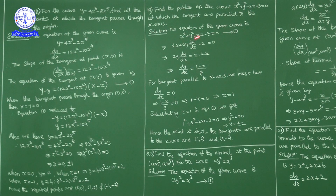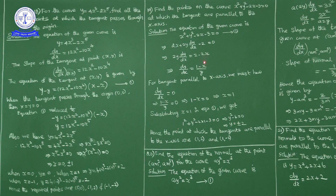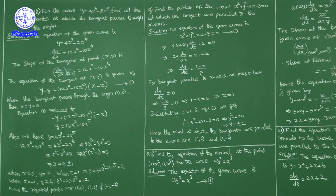Differentiating x² + y² - 2x - 3 = 0 with respect to x: 2x + 2y(dy/dx) - 2 = 0. So 2y(dy/dx) = 2 - 2x, and cancelling 2 on both sides: dy/dx = (1 - x)/y.